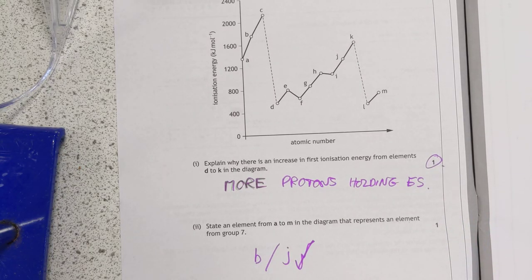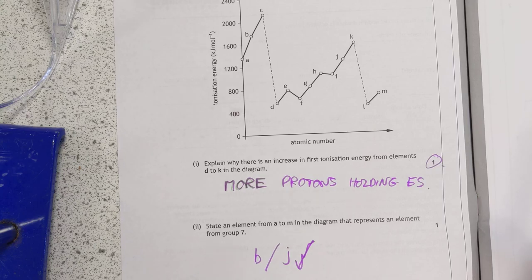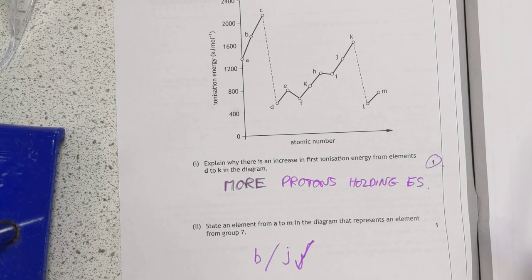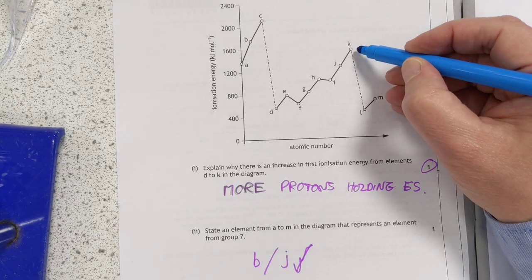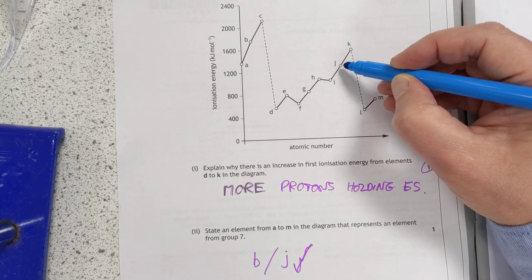I'm not the SQA of course, and these are my guest solutions. You can't take them as gospel and use them to judge a mark, and I probably made mistakes. Happens a lot. Select an element from A to M that represents group 7. Well, the highest point here is always going to be group 8, so the one down from it. So J or B.